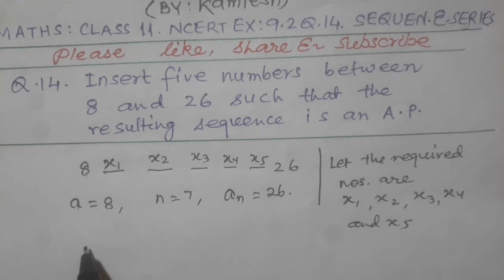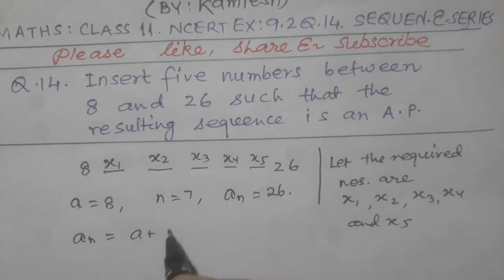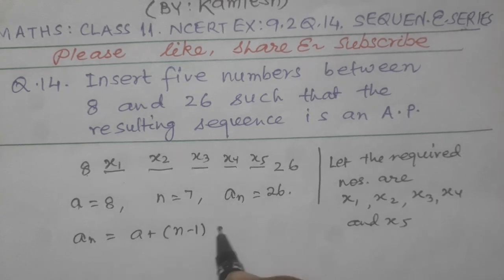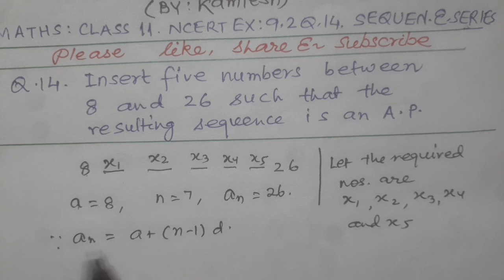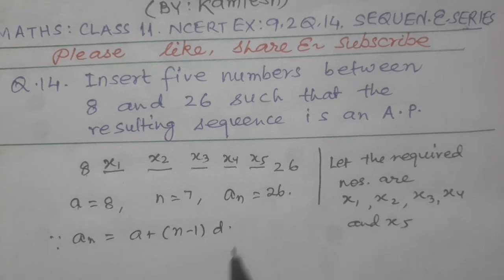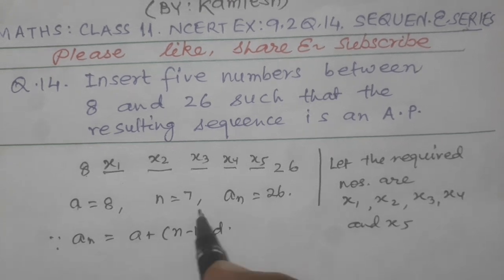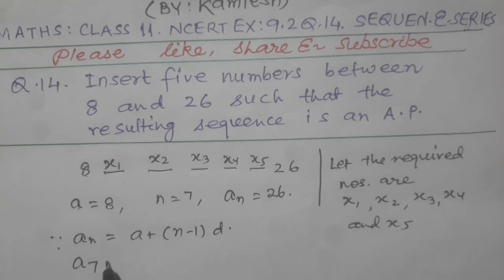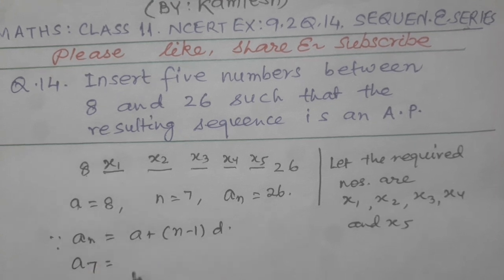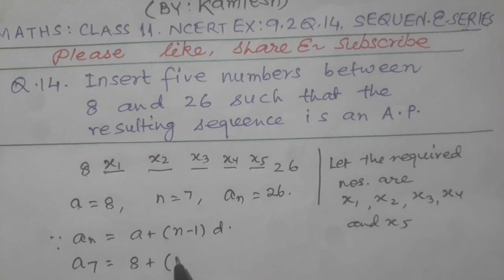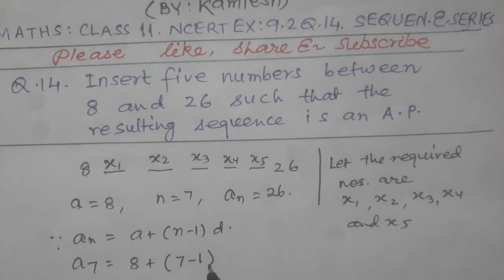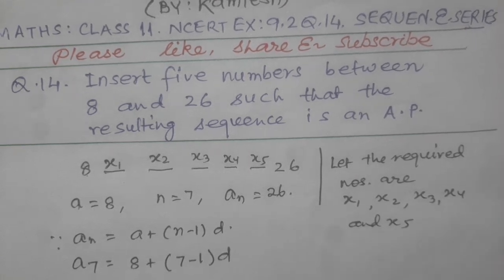And we know that An equal to a plus n minus 1 into d. Since An is equal to a plus n minus 1 into d, so here a7 equal to a is 8 plus n is equal to 7 minus 1 into d, and d I have to find.